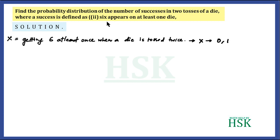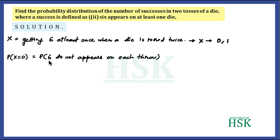It should be noted that since success is defined as six appearing on at least one die, six appearing on either or both throws counts as one success. There is no possibility of two successes — X can only take values 0 or 1. P(X=0) means no success, i.e., six does not appear on either throw. This equals 5/6 × 5/6, since there are five outcomes that are not six out of six total.